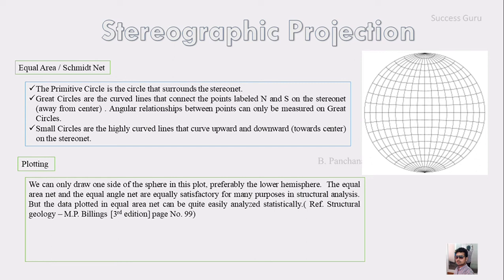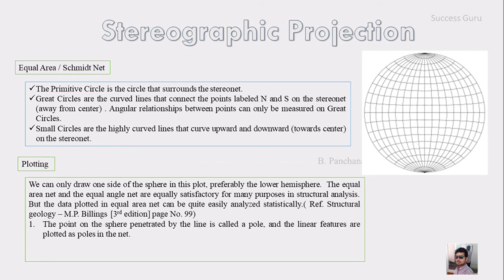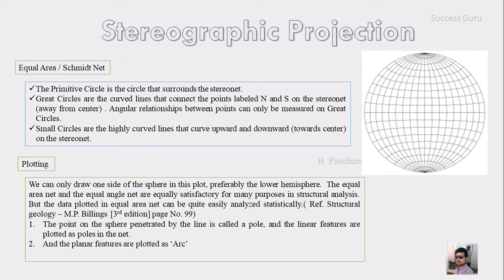This has been mentioned in the book Structural Geology by Billings, and the page number is also given. The planar feature is plotted as an arc, and the linear feature is plotted as poles in the structural portion.